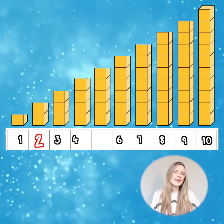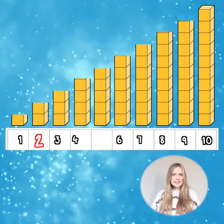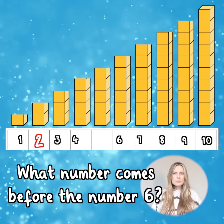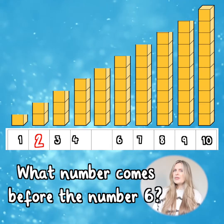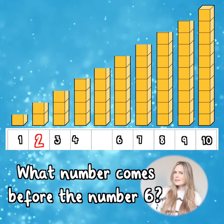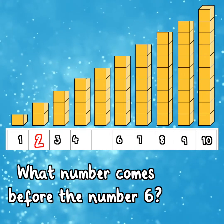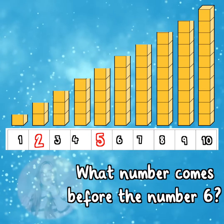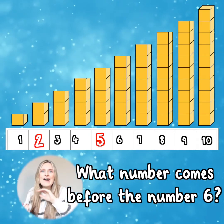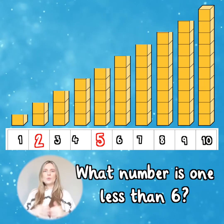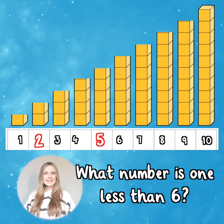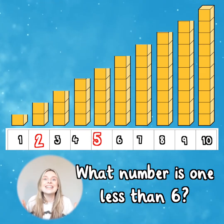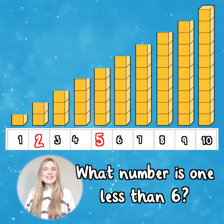Looking at the second missing number, what number comes before the number six? Five. So what is one less than six? Yes, the answer is five.